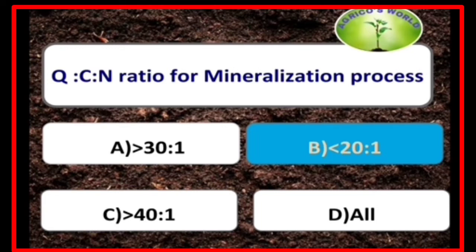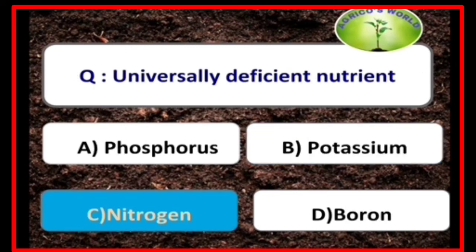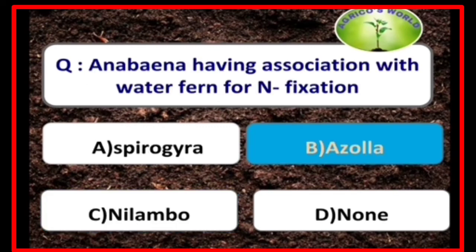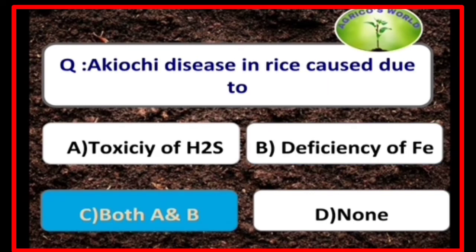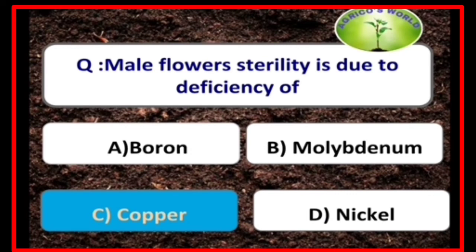C:N ratio for mineralization is less than 20:1. Nitrogen is the universally deficient nutrient. Anabaena has an association with the water fern Azolla for nitrogen fixation. Akiochi disease in rice is caused due to toxicity of H₂S and deficiency of iron. Male flower sterility is due to deficiency of copper.